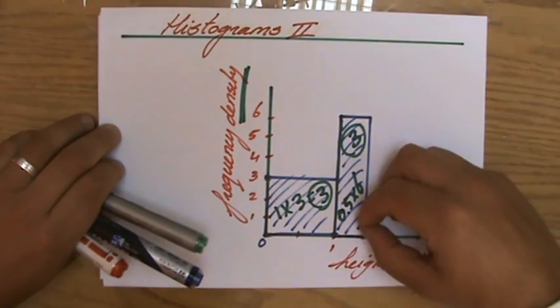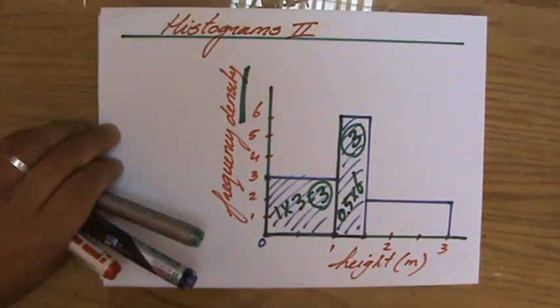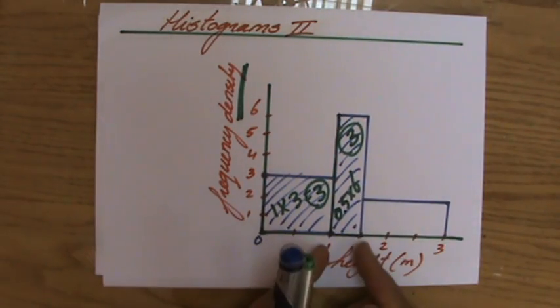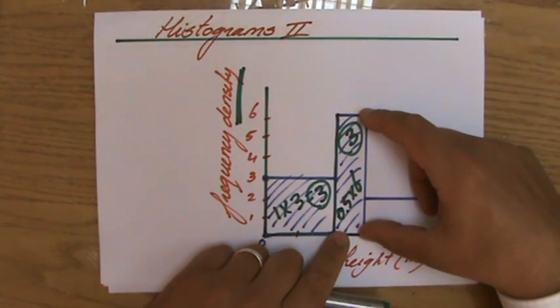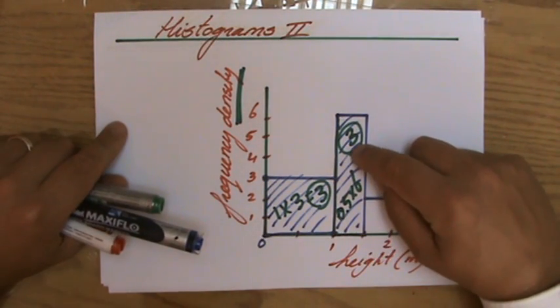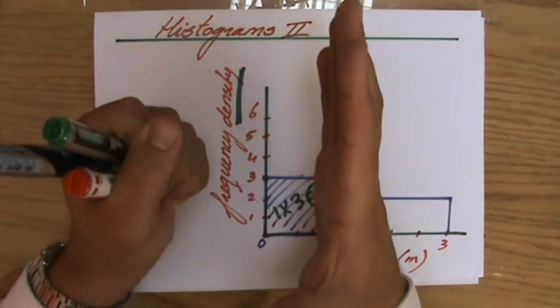So now why is this bar a lot taller than that one? Because the width, the class width, is much more narrow, and that's why it's more unique that you have also three goats in a smaller class. That's why the bar goes up like that.